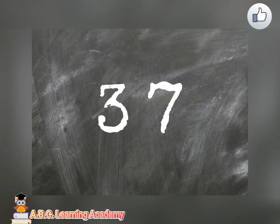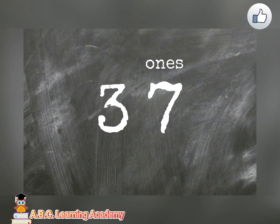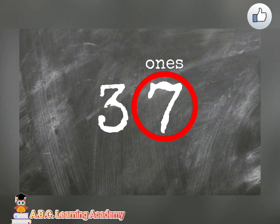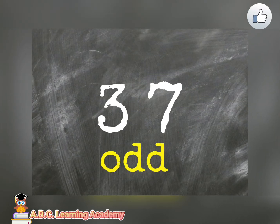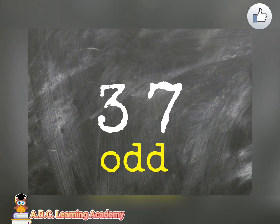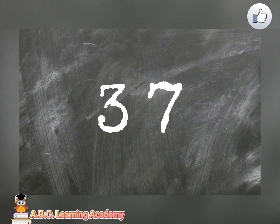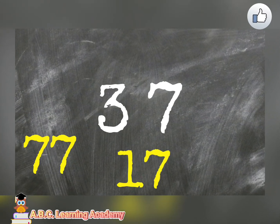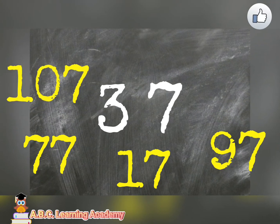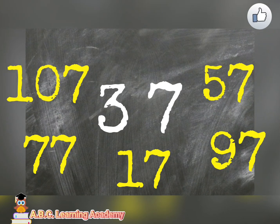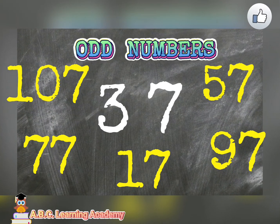Another example. We have here 37. What is your ones? Very good. It is seven. And seven is an odd number. Therefore, all the numbers that end with seven, just like 77, 17, 97, 107, 57, these are all odd numbers.